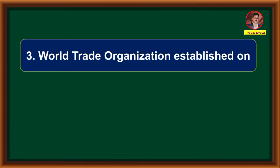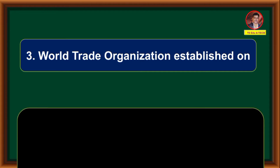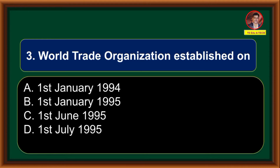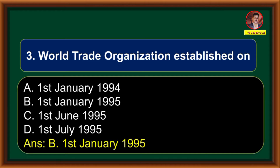World Trade Organization was established on: Option A: 1st January 1994. Option B: 1st January 1995. Option C: 1st June 1995. Option D: 1st July 1995. Correct answer is Option B — 1st January 1995.